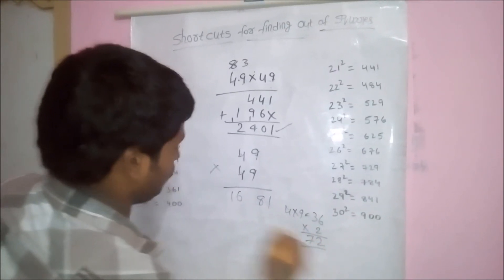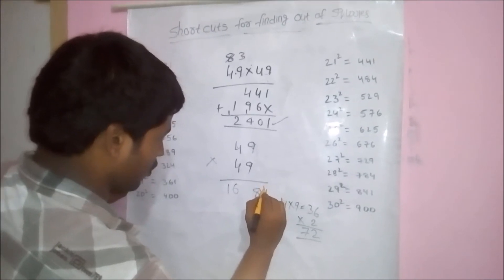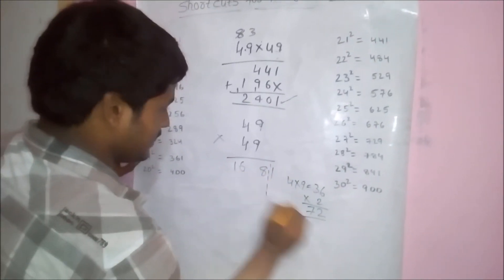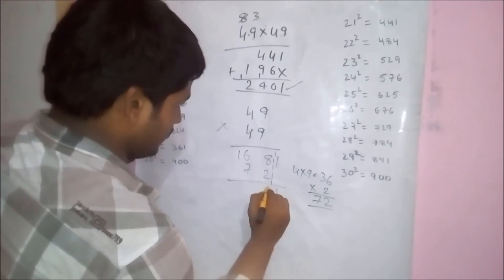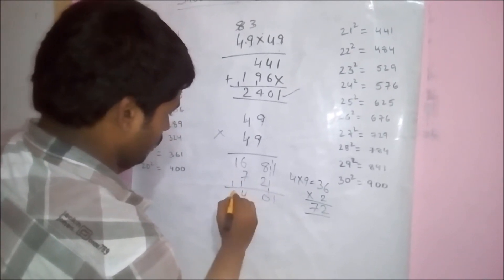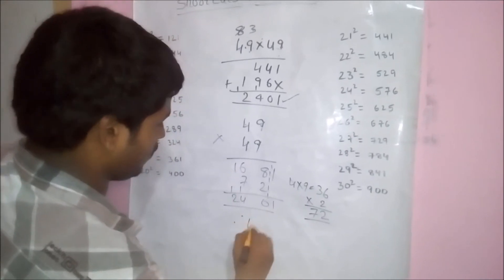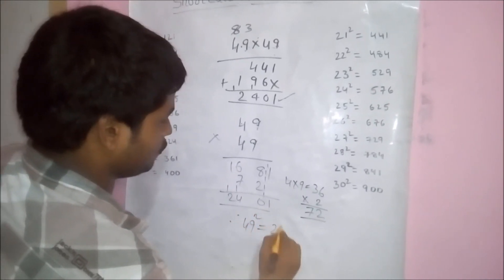That means here we have to dot like this. And 72 can be replaced like this. That means 1, 10, 14, 2. That means 49 square becomes 2401.